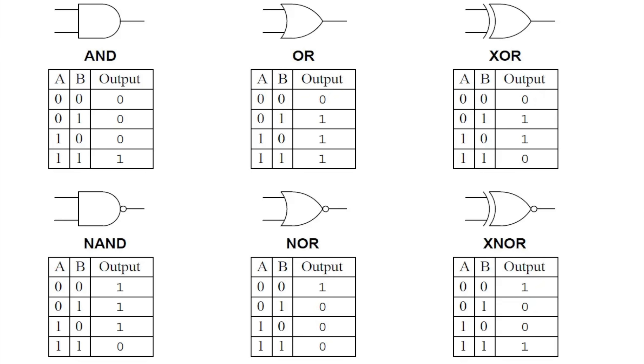Let's spend a minute talking about those gates, because that's about all you really have to understand to make sense of the rest of this. Basic logic gates are the fundamental building blocks of digital circuits. They are electronic circuits that perform a logical operation on one or more binary inputs to produce a single binary output, which can be either 1 or 0. There are several types of basic logic gates, each with its own specific logic function. Let's take a look at them.